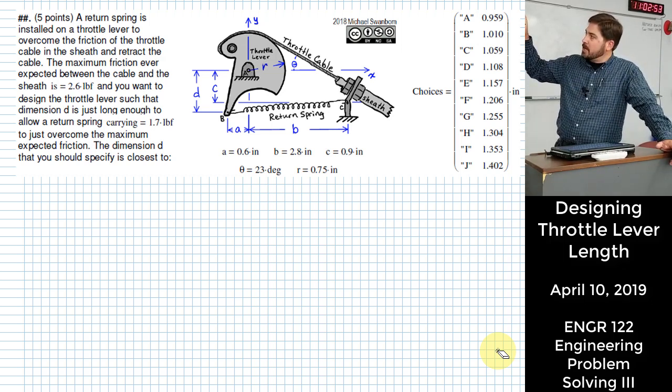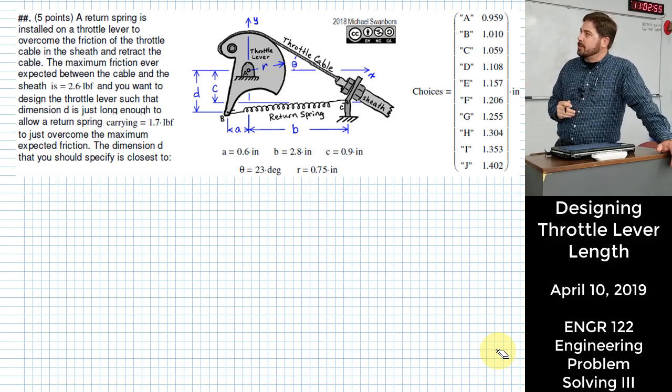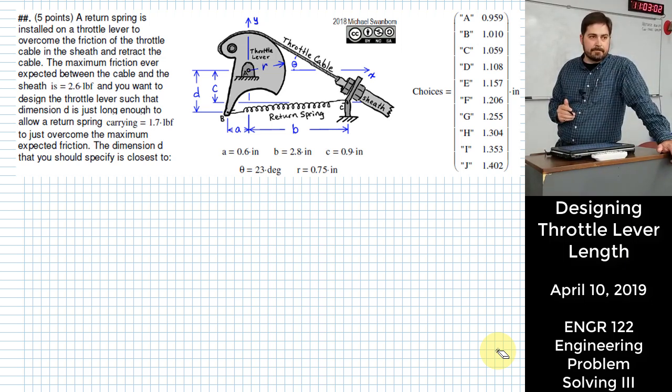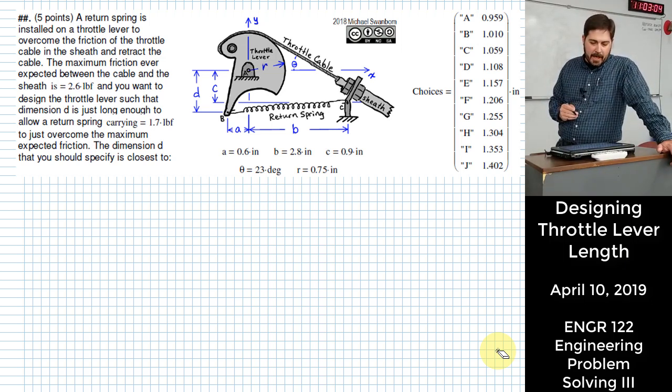So you're imagining here how would I change dimension D on this figure so that I could make this throttle lever overcome the force of friction in the cable. How do you suggest we start?